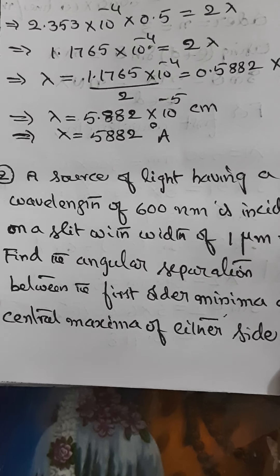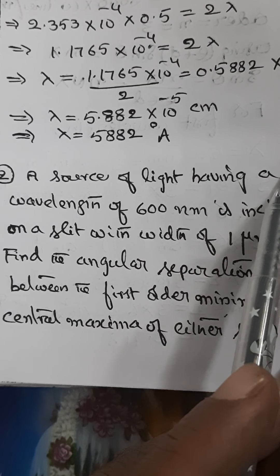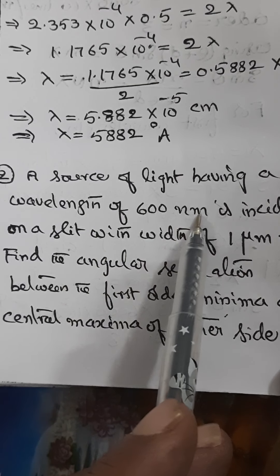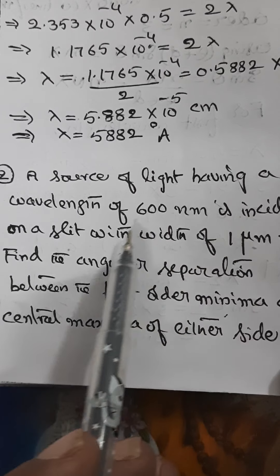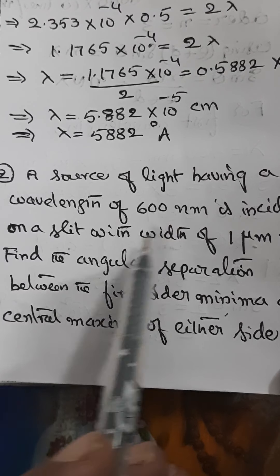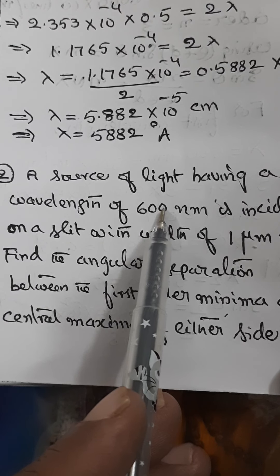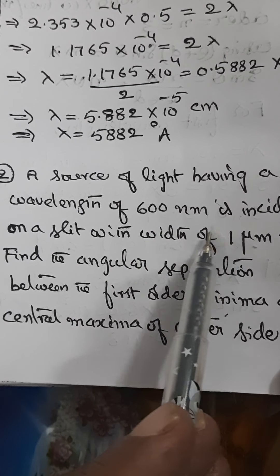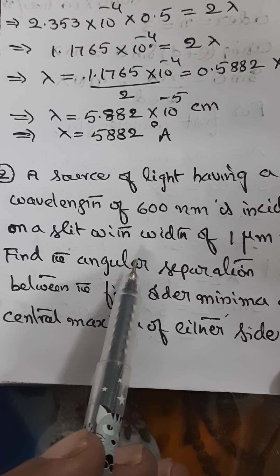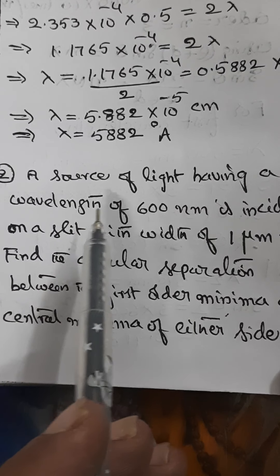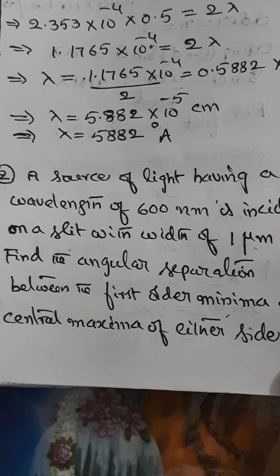Let us look at another problem. A source of light having a wavelength of 600 nanometers is incident on a slit of width 1 micrometer. Find the angular separation between the first order minima and central maxima on either side. So angular separation means we have to find theta. Lambda is given as 600 nanometers, width of the slit is given as 1 micrometer, and first order means N value is 1.